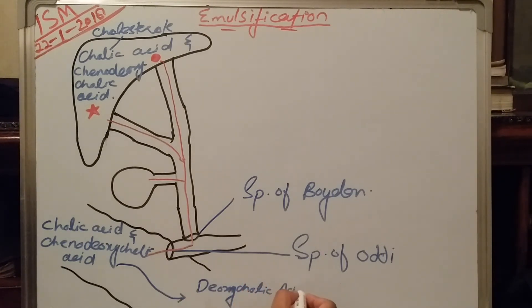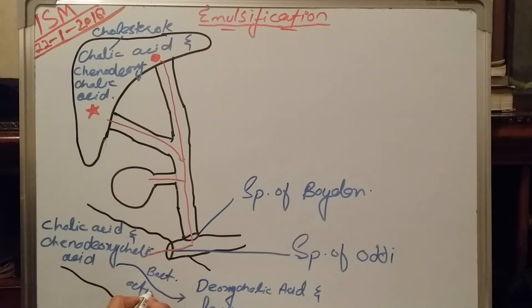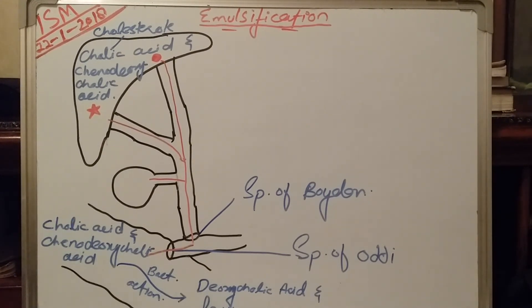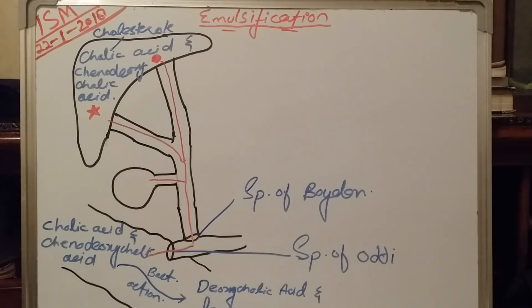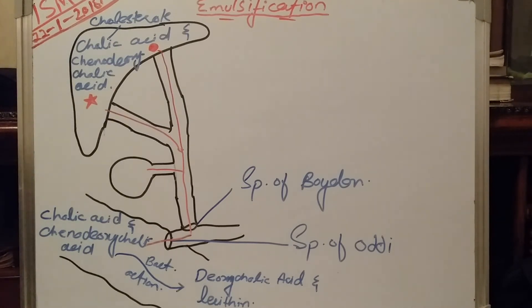Here, bacteria perform their action — and lecithin also. So under bacterial action, the chenodeoxycholic acid and colic acid are converted into deoxycholic acid and lecithin. So this is about the bile acids.